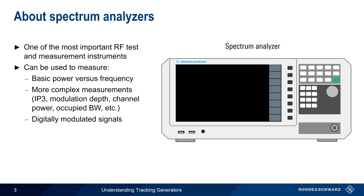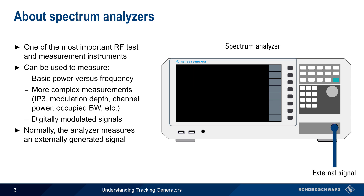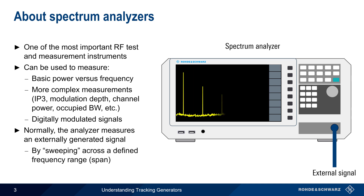In all three of these cases, the analyzer normally measures an externally generated signal — that is, a signal which is being created outside of the spectrum analyzer itself. And in most cases, this external signal is measured by repeatedly sweeping a relatively narrow filter across a defined frequency range, or span.